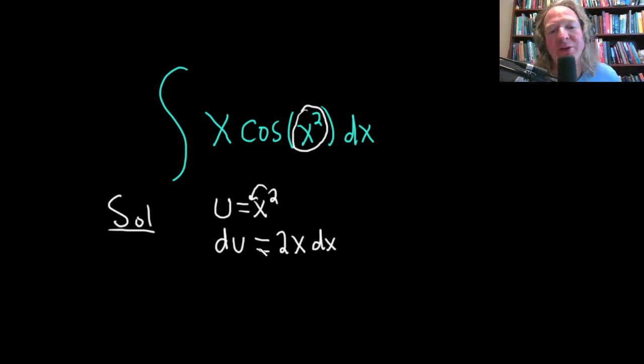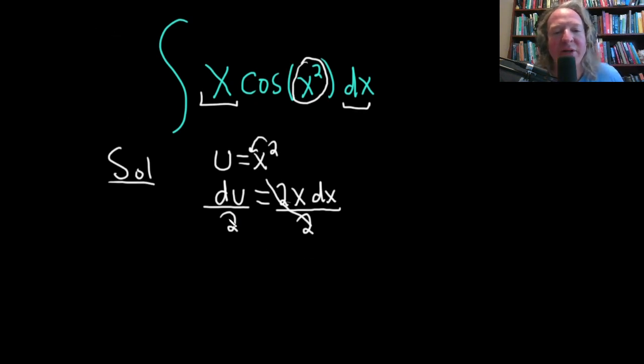This is called differential notation. The goal is to make this look like what's up here. So up here, we have an x and a dx. But down here, we have a 2x dx. So we have to get rid of the two, and we can do that by dividing by it. So these cancel, and we're left with 1 half du. We can write du over 2 as 1 half du, and that's equal to x dx.